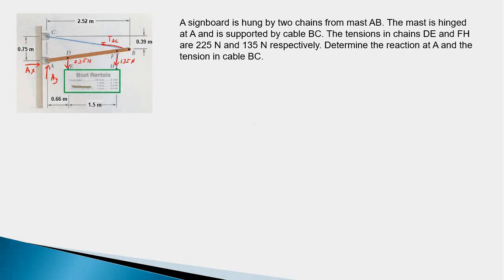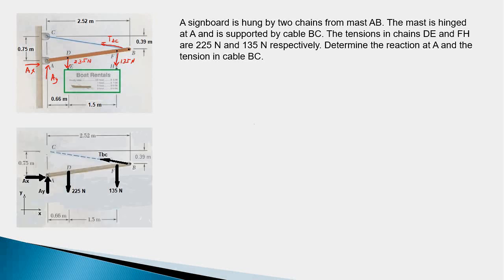This is a 2D structure with all forces in one plane. There are three unknowns: the two components of the reaction at point A (Ax and Ay) and the tension force TBC in the cable. Since it is a 2D structure we have three equations available, so the problem is solvable. The FBD shows the mast AB, the two chain forces, the two reaction components at A, and the cable tension — the three unknowns and two known forces.